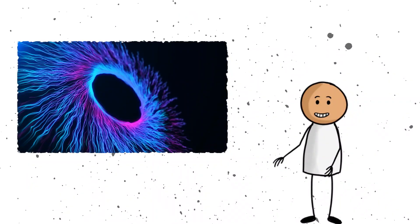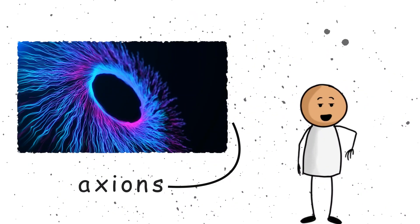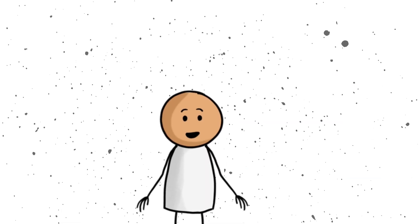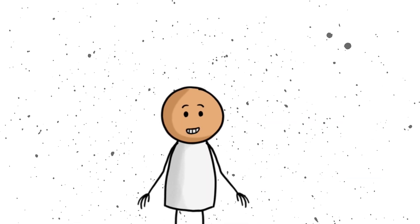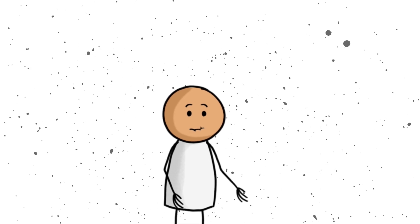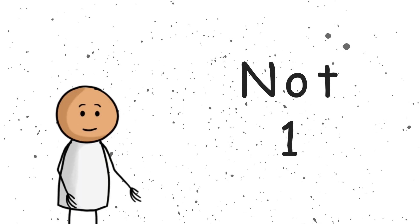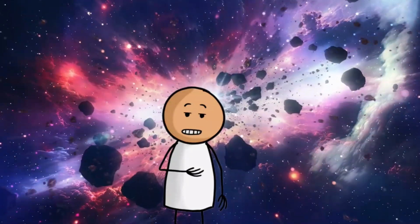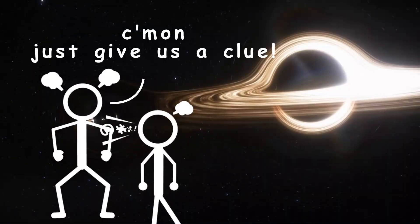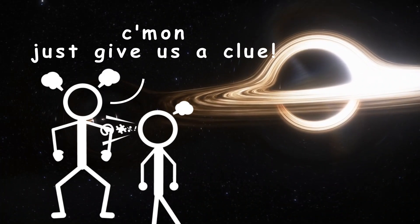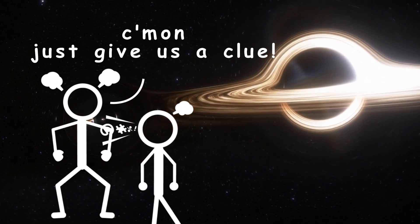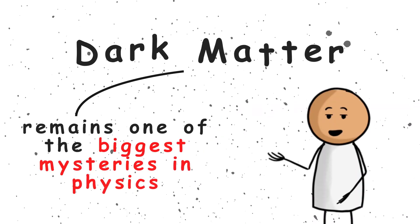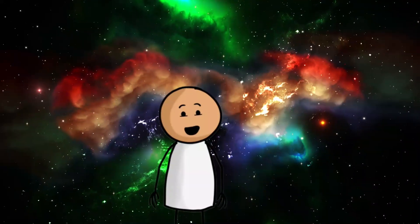Other guesses include mysterious things called axioms, or maybe even tiny ancient black holes scattered across the universe. But here is the kicker. We still have not found a single confirmed piece of dark matter. Not one. It is like the universe has a secret recipe and refuses to share the ingredients. Meanwhile, scientists are standing in the cosmic kitchen shouting, come on, just give us a clue. So for now, dark matter remains one of the biggest mysteries in physics.